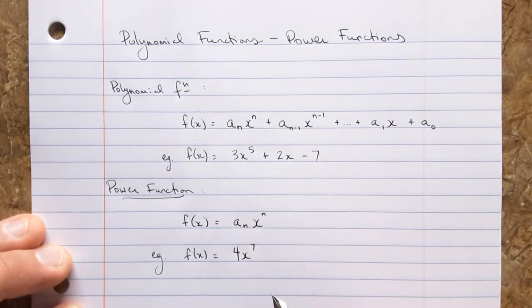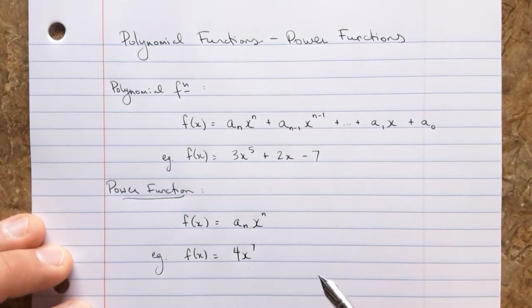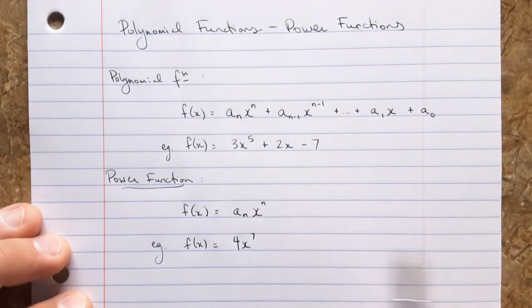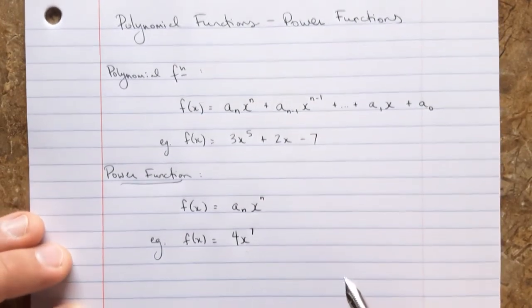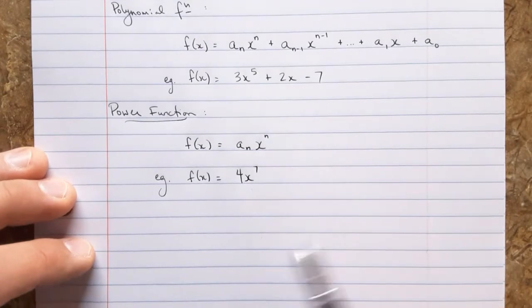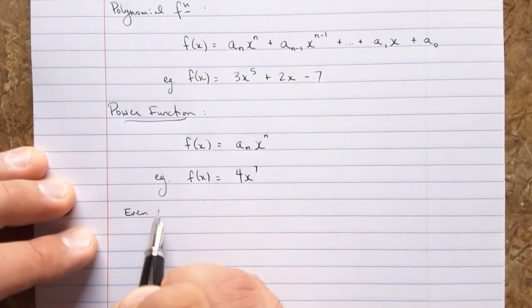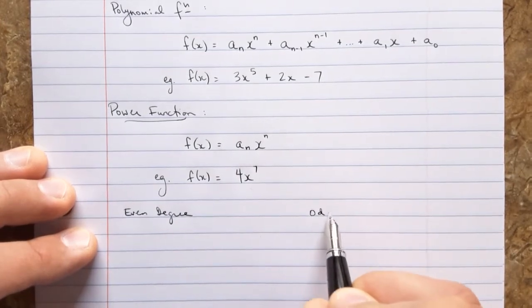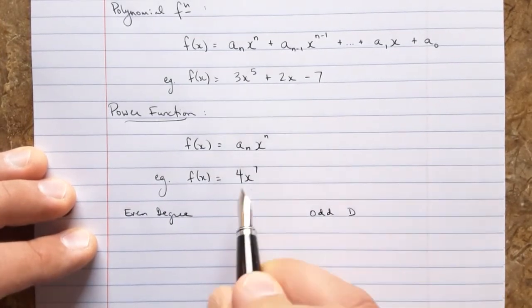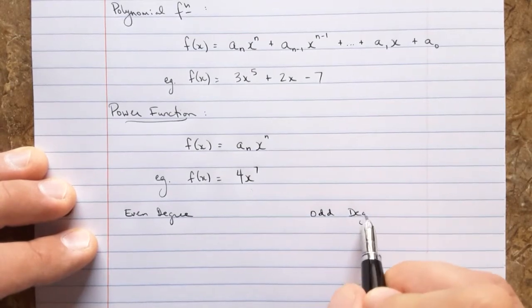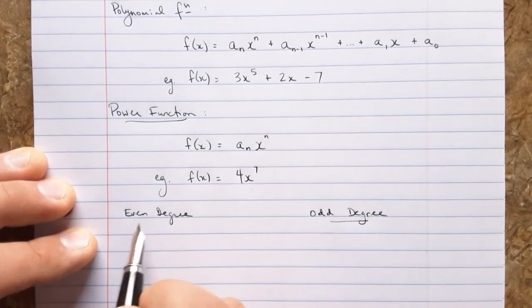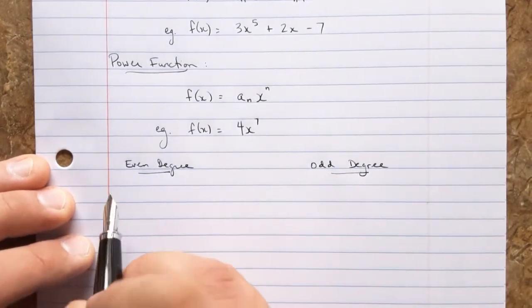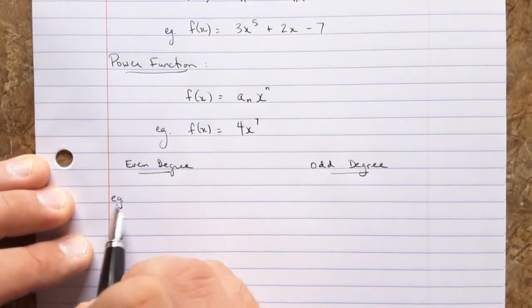So this is a simpler kind of polynomial. And we're going to look at what that means for the graph of it and what its behavior is as we go to the left and the right on the graph. They come in two flavors. The first flavor is an even degree, and the second flavor is an odd degree. So the one I listed here is an odd degree.